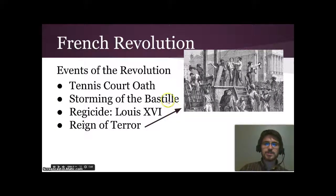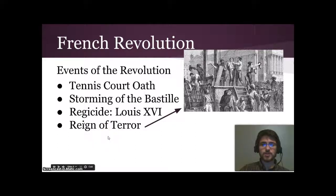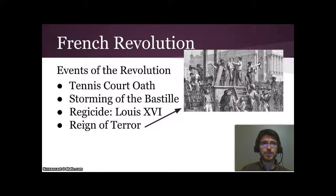Here are the events — what actually happened. The king had called the Estates General, which was their legislative body that didn't have a lot of power but could raise taxes. Because he didn't like what the Third Estate was saying, he kicked them out of the meeting — the Third Estate being everyone who's not the nobility or the clergy.